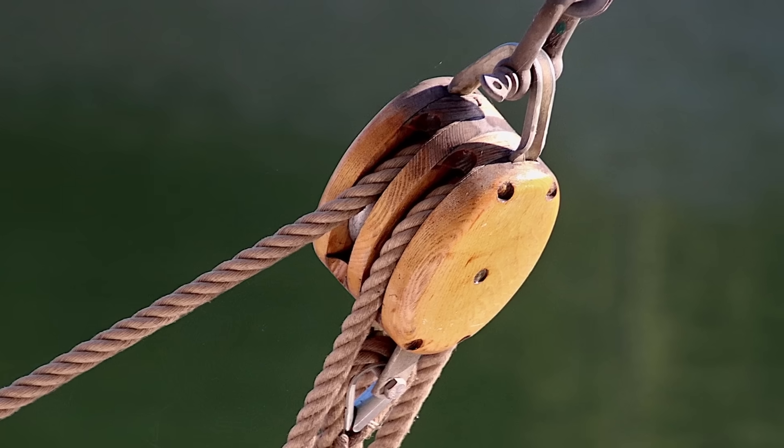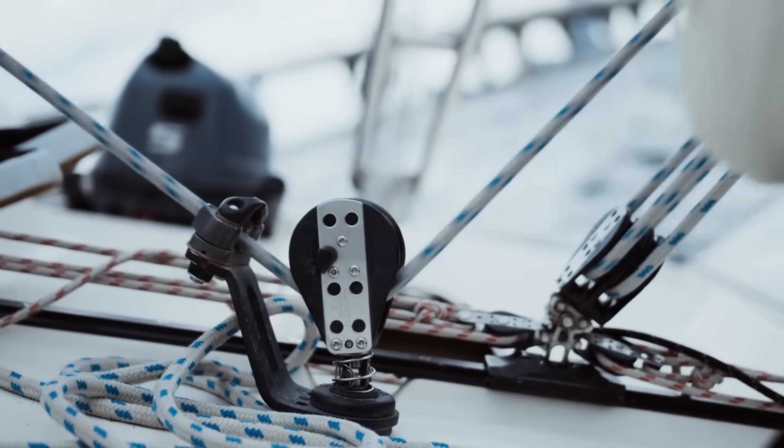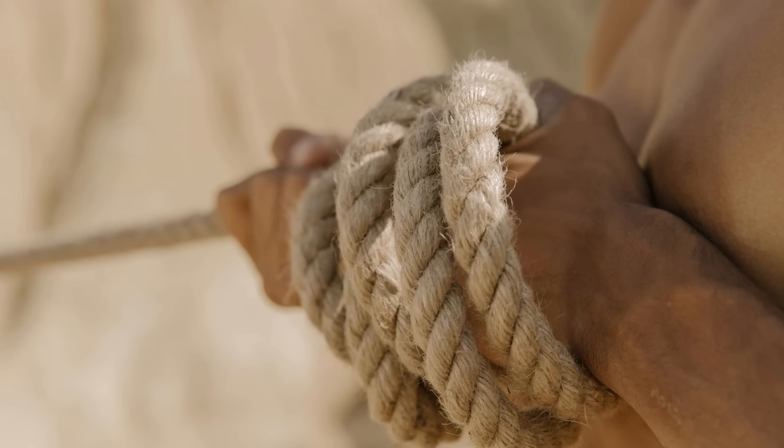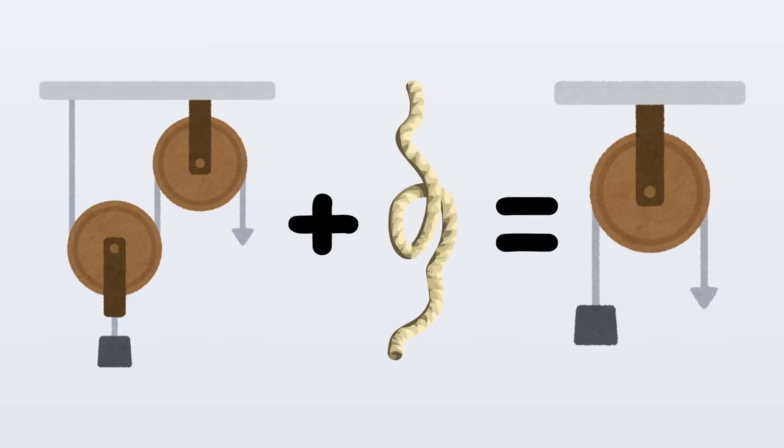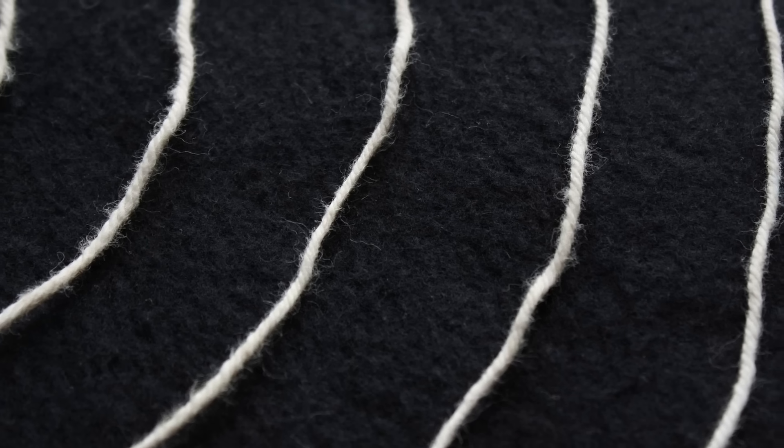In sailing, a block is a pulley system that uses multiple wheels to create a mechanical advantage, greatly reducing the effort needed to raise sails or move heavy loads. The trade-off being you would need to pull the rope for a longer distance.